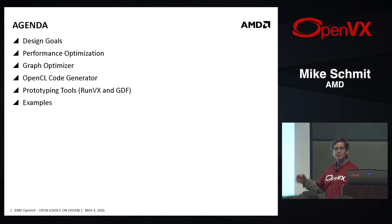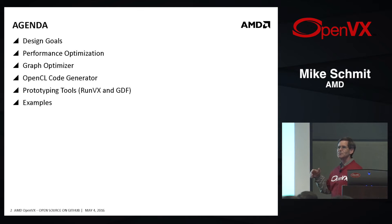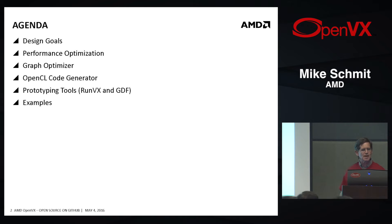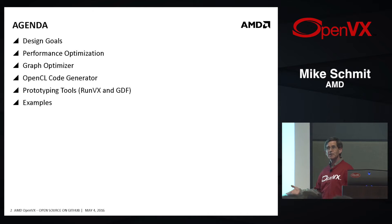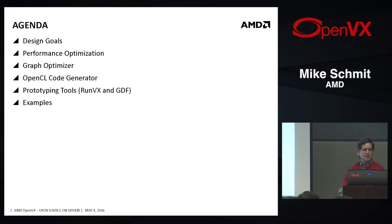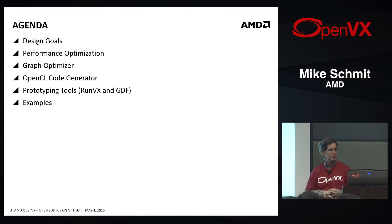I'm going to start off by telling you about what our design goals were, so you understand where we were coming from. Then I'm going to go through some of the performance optimizations, and a specific thing that we have is the graph optimizer, which I'll talk about. And we have these prototyping tools called RunVX, which are quite unique to what we have.